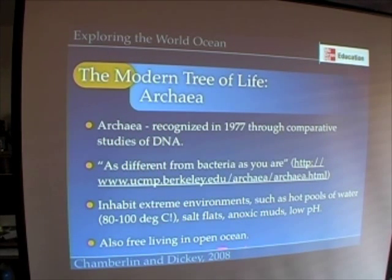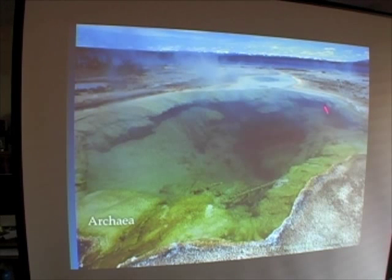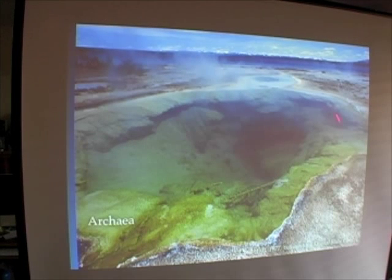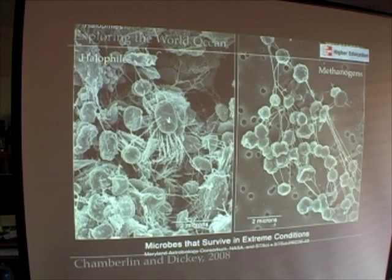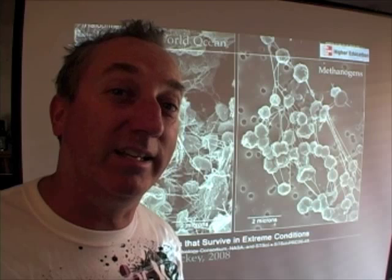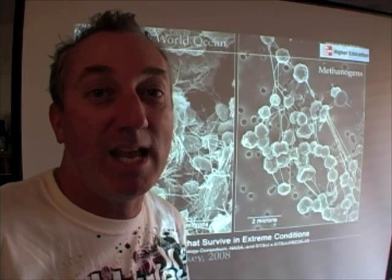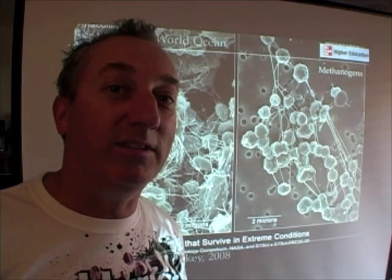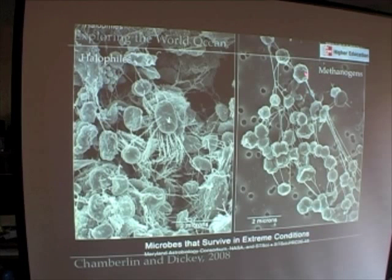We find Archaea in extreme environments, but also in the open ocean. If you go to Yellowstone Park, you might see a hot pool with colored areas — some of these are Archaea. This is the kind of environment in which Archaea thrive and reproduce. If you had access to an electron microscope, this is what they would look like. They don't look very impressive — they just look like little dots, little pieces of sand. What they're more notable for is the fact that they can survive in pure salt or in a very high methane environment.